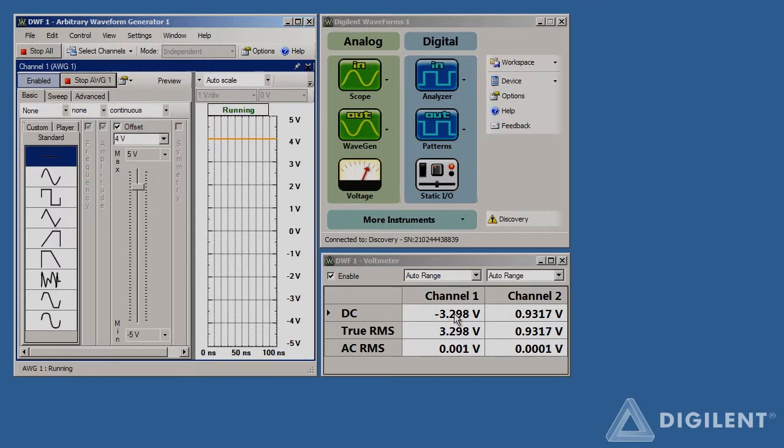The voltage displayed on channel 1 of the voltmeter, V1, is about negative 3.3 volts, and the voltage displayed on channel 2, V2, is about 0.93 volts. These values are close to what I calculated that they should be. It looks like I implemented the circuit diagram correctly.